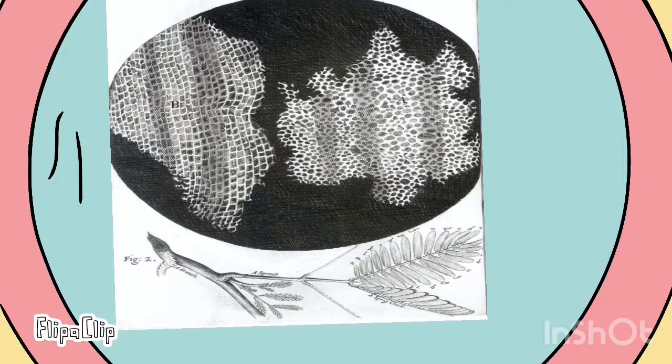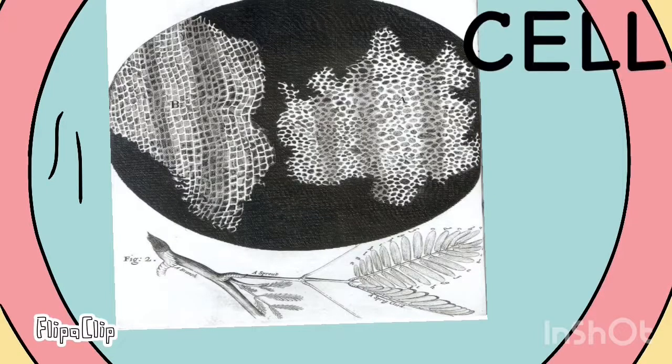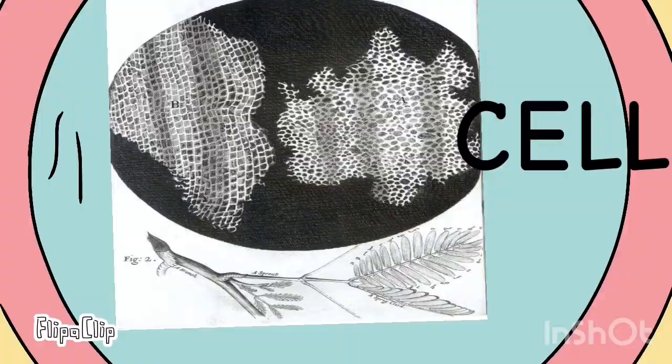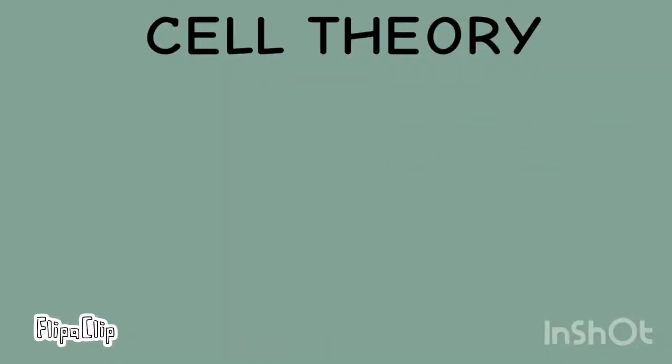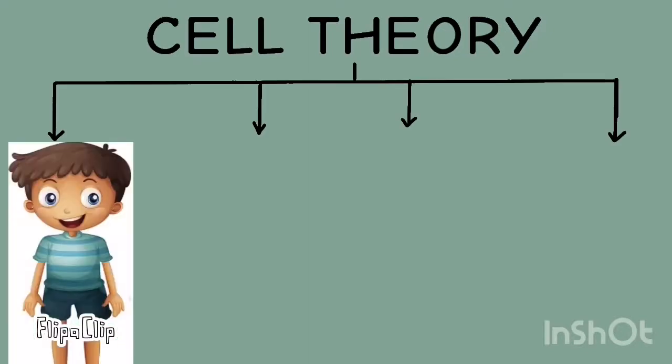And saw many box-like structures. He called these boxes cells. In 1838, the cell theory was put forward. This theory meant that all living things are made up of cells. Hence, they are the building blocks of living organisms.